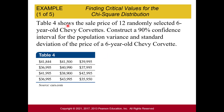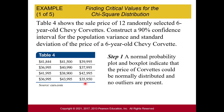Here's our example. This table shows the sell price of 12 randomly selected 6-year-old Chevy Corvettes. Construct a 90% confidence interval for the population variance and standard deviation for the price of this car. A normal probability plot and box plot indicate that the price of Corvettes could be normally distributed and no outliers are present — we checked this previously when discussing population mean.